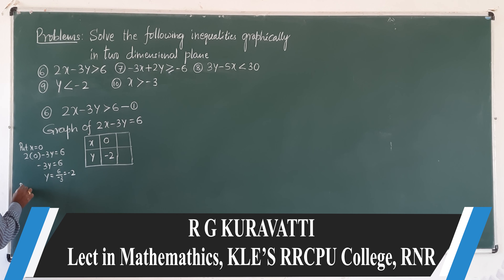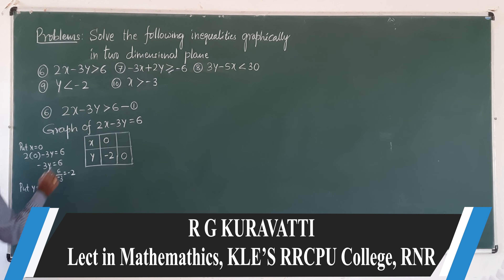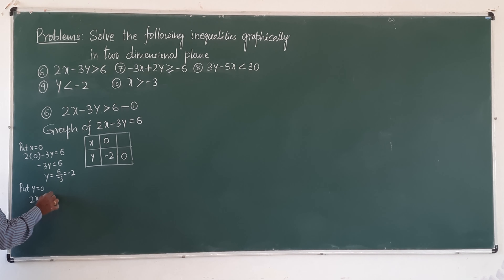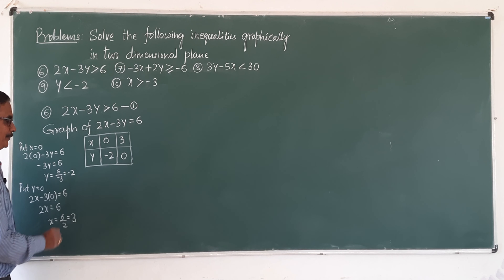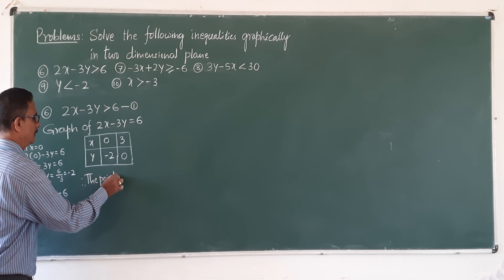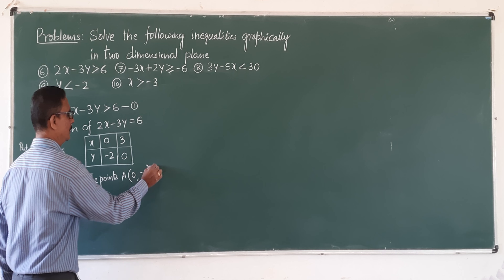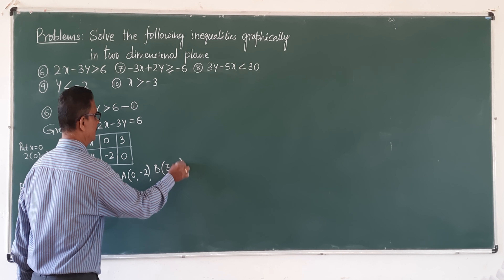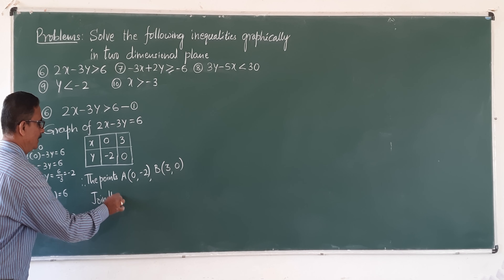Conversely, put y equal to 0: 2x minus 3 into 0 equals 6, so 2x equals 6 divided by 2, that is 3, x value is 3. Therefore, point A is (0, minus 3) and point B is (3, 0). Join the points A and B.